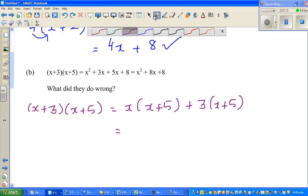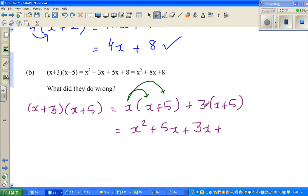So now you're distributing this x with this x, multiplying x with this x and then x with this 5. So the next step would be x times x which is x squared plus x times 5 is 5x. Then you've got 3 times x is 3x and 3 times 5 is 15.